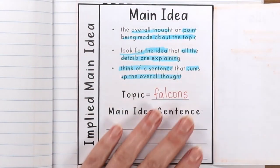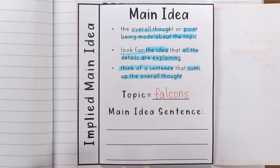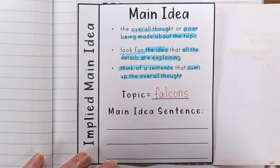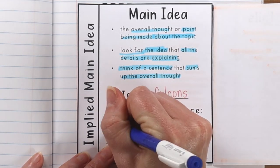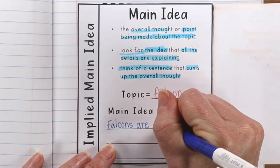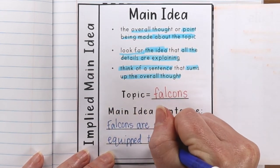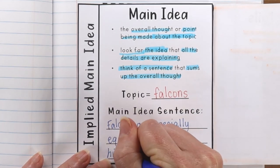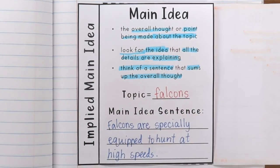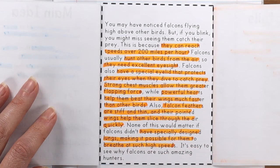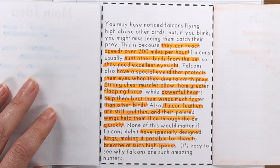We're going to write our main idea sentence here — and remember, at any point in the video, if I'm going faster than you, just pause or back it up so you can catch up. Our main idea sentence is: 'Falcons are specially equipped to hunt at high speeds.' That is the overall thought of this passage — all these details are telling us what they have that helps them be able to hunt at such high speeds.